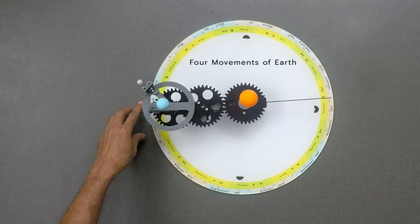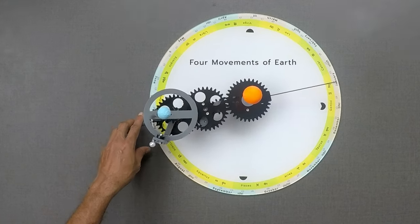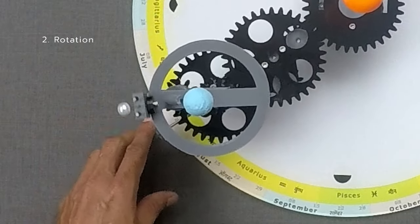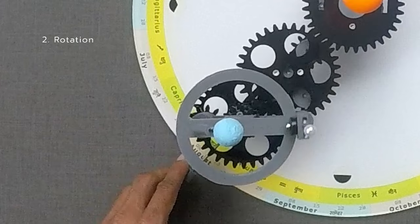Earth has four kinds of movements. It revolves around the sun. Earth also spins around its axis as it revolves.